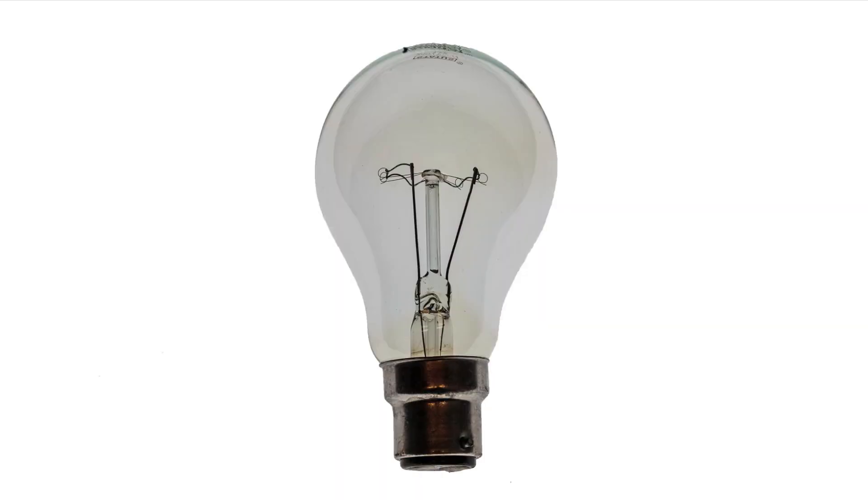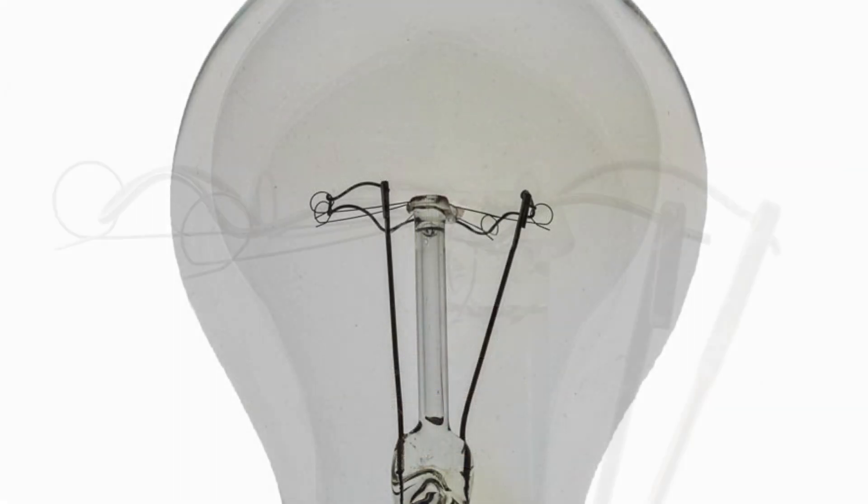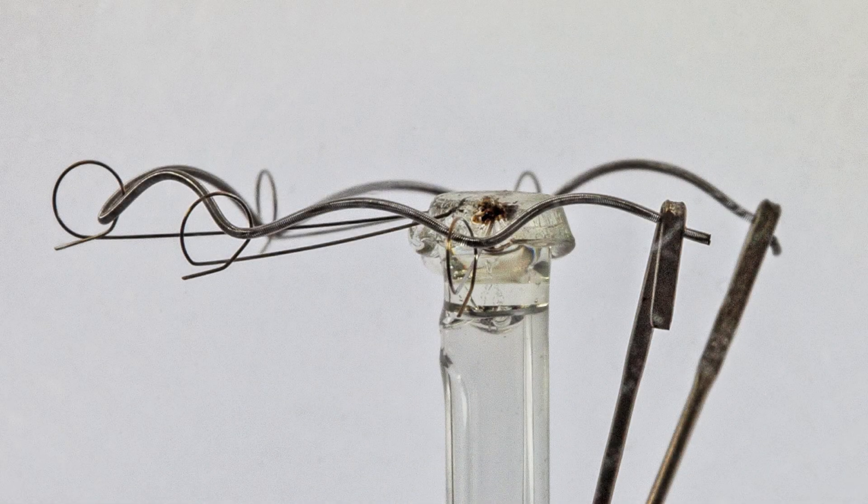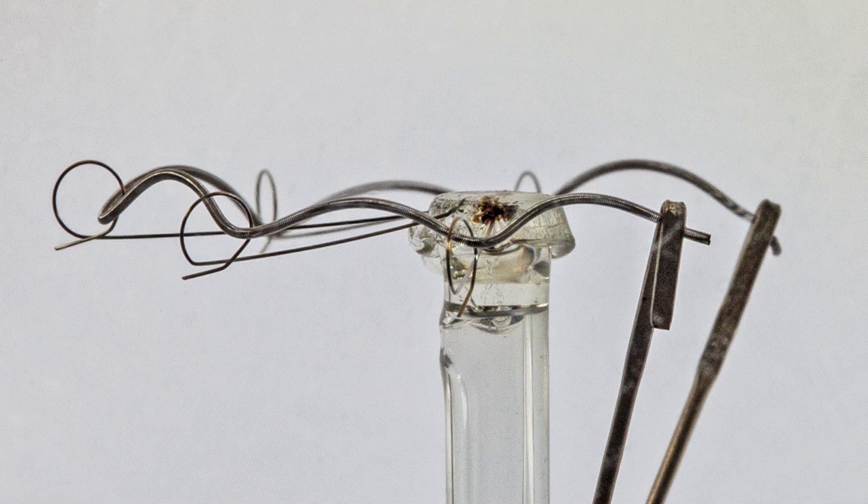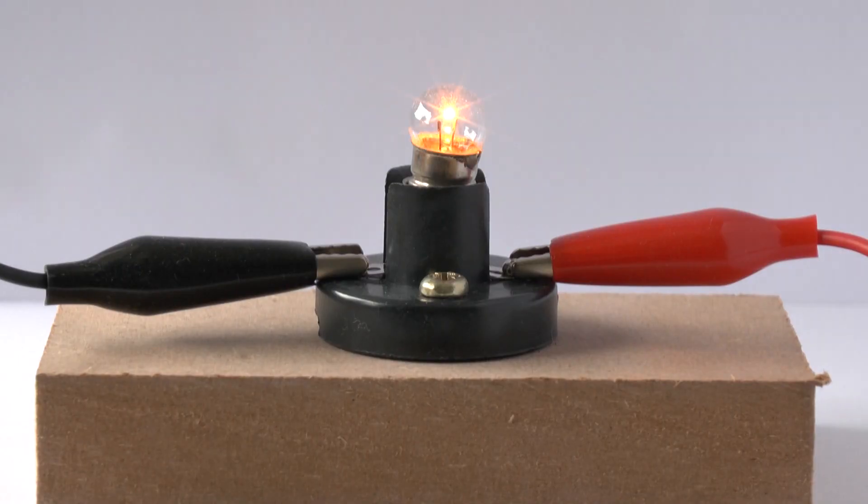Now let's look at incandescent lamps. These lamps have a very fine coiled wire or filament within the glass bulb. When current passes through this filament it heats up, becoming white hot and giving out light.